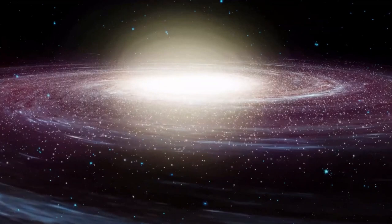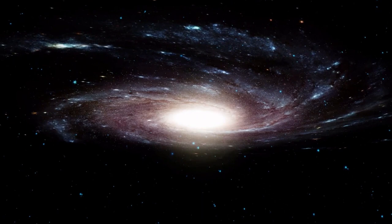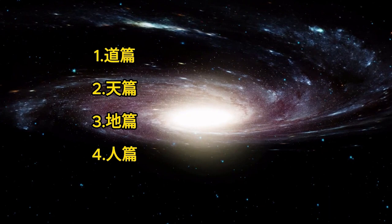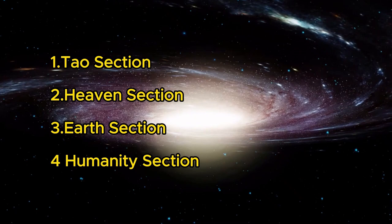This version I am talking about stands apart from others due to its unique structure, which markedly diverges from the more familiar renditions. It is meticulously segmented into four distinct sections, which are called in Chinese, Tao Pian, Tian Pian, Di Pian, Ren Pian, or simply in English, Tao Section, Heaven Section, Earth Section, and Humanity Section, each section comprising several diverse chapters.